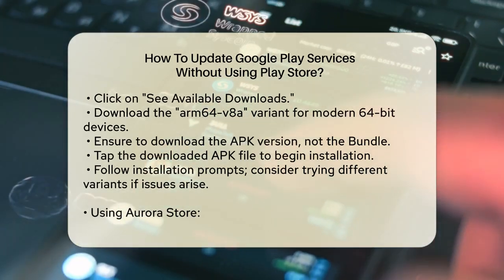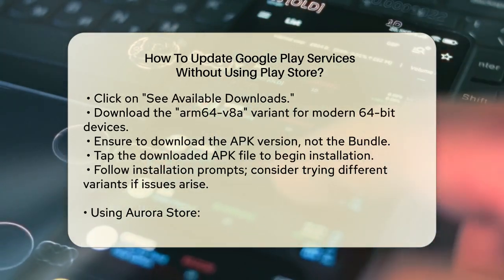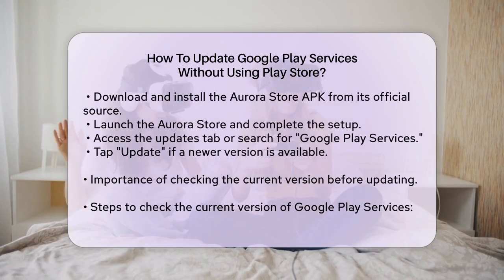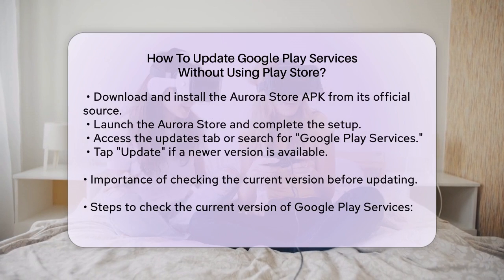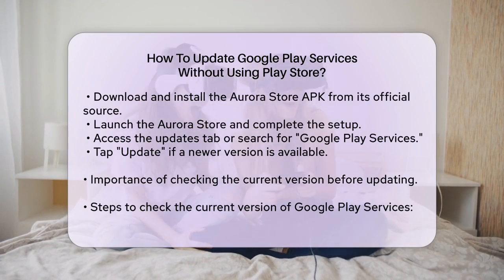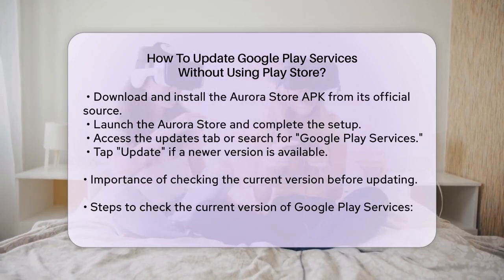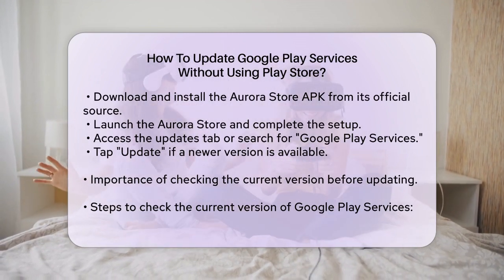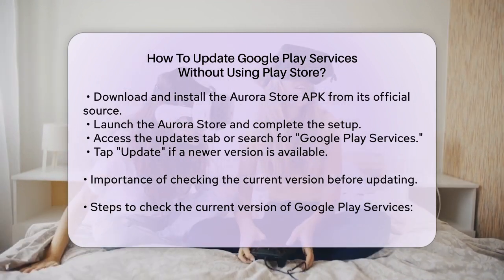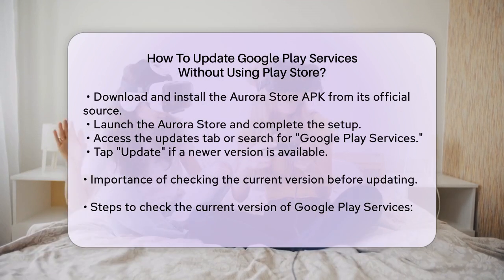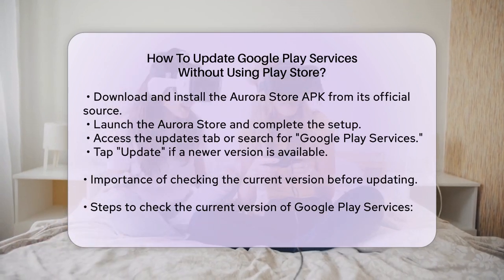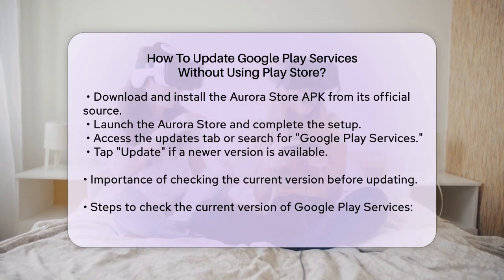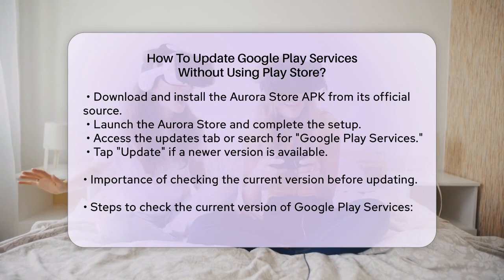Using Aurora Store — another method involves using the Aurora Store, a third-party alternative to the Play Store. Download and install the Aurora Store APK from its official GitLab Releases page or through the F-Droid Store. Launch the Aurora Store and go through the setup process. Navigate to the Updates tab or search for Google Play Services in the app. If an update is available, tap the Update button to download and install the latest version of Google Play Services.